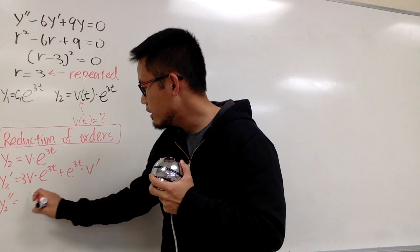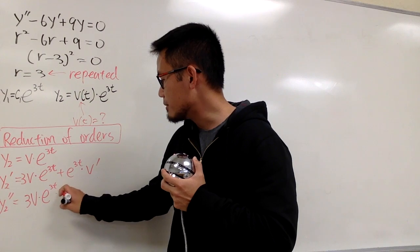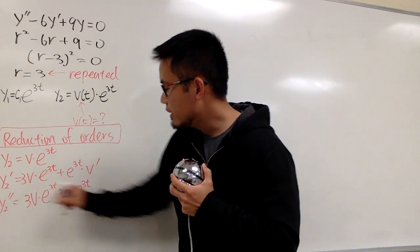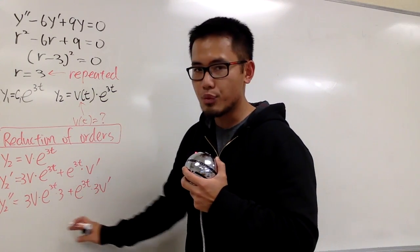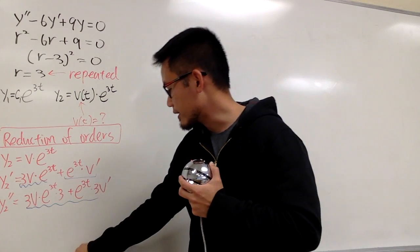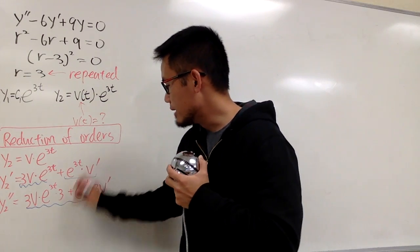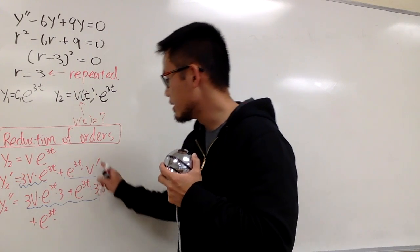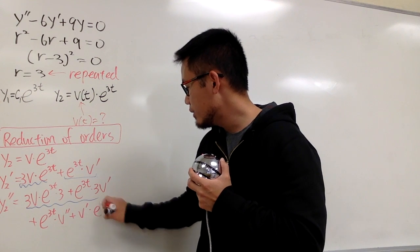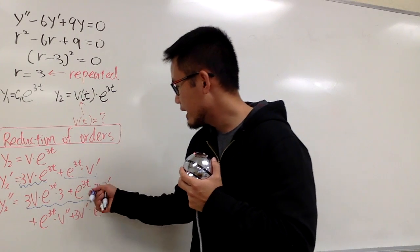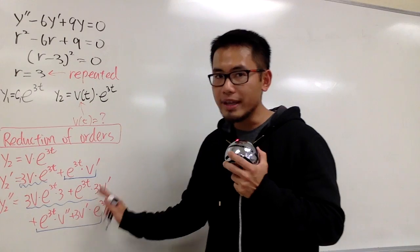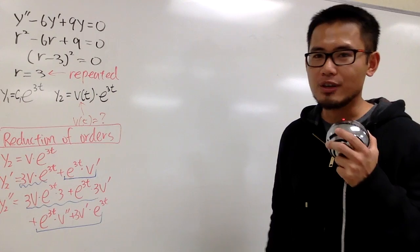For y2 double prime, we apply the product rule twice. From the first term, we get 3·phi times e^(3t) times 3, plus e^(3t) times 3·phi prime, giving 9·phi·e^(3t) and 3·phi'·e^(3t). From the second term, e^(3t)·phi', we get e^(3t)·phi'' plus 3·phi'·e^(3t). So y2'' contains: phi''·e^(3t) + 6·phi'·e^(3t) + 9·phi·e^(3t).